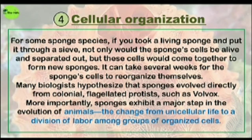The fourth characteristic is cellular organization. For some sponge species, if you put a living sponge through a sieve, not only would the sponge still be alive after being separated, but its cells would come together to form a new sponge — it can take several weeks for the cells to reorganize. Many biologists hypothesize that sponges evolved directly from colonial flagellated protists such as Volvox. Importantly, sponges exhibit a major step in animal evolution: the change from unicellular life to a division of labor among groups of organized cells.